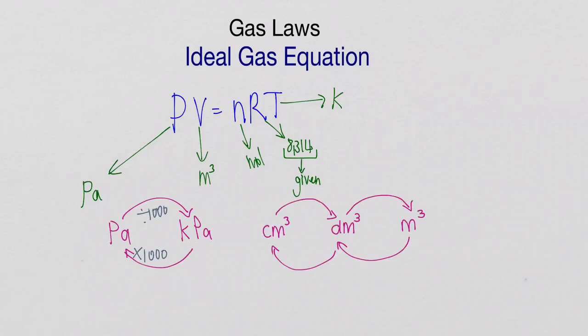Our second important conversion to take note of is for volume. Between centimeter cube, decimeter cube, and meter cube. If we're going on the screen from left to right, each time you will divide by one thousand. If you go from meter cube to decimeter cube to centimeter cube, it's a multiply by a thousand.